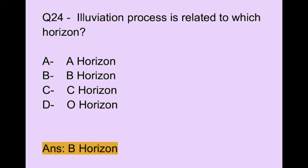Question number 24. Eluviation process is related to which horizon? Option A: A horizon. Option B: B horizon. Option C: C horizon. Option D: O horizon. The correct answer is option B.